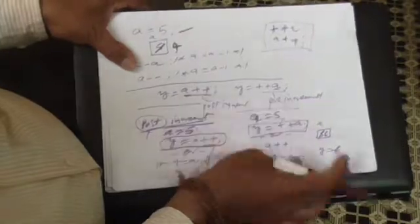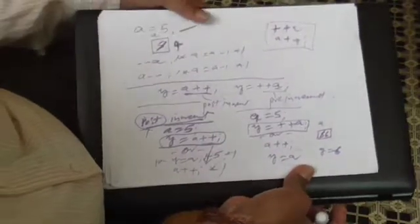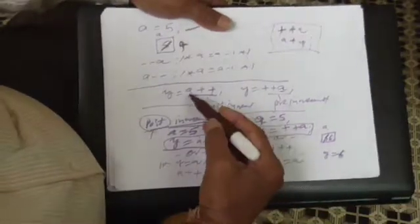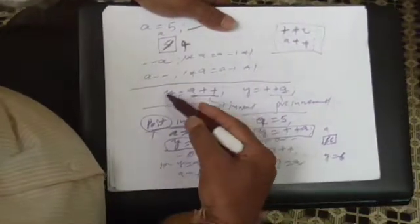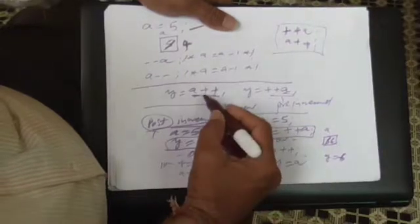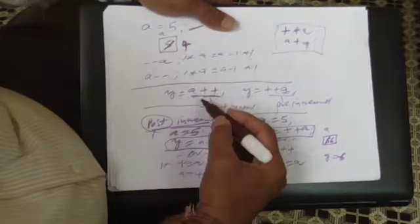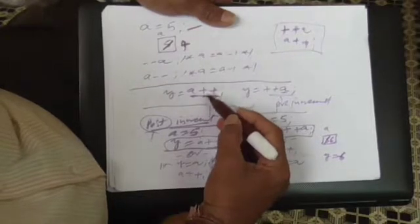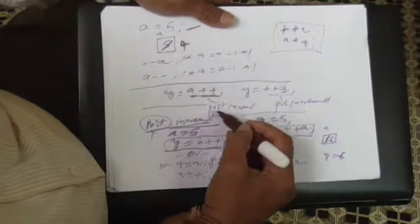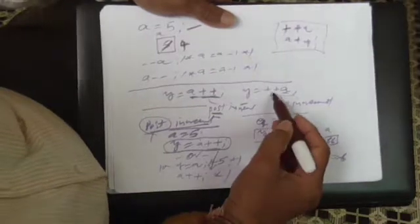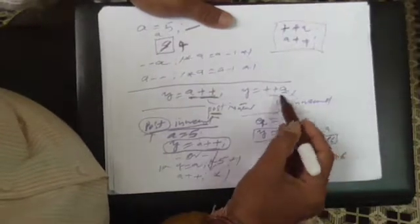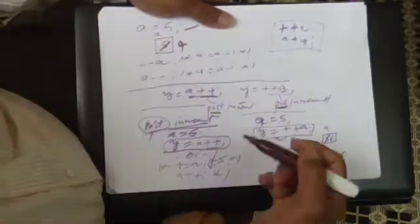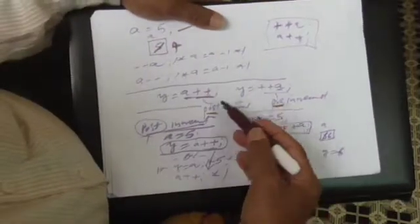The position of ++ is going to influence the value of the expression. If you write Y = A++, the ++ is written after A and hence it is called a post-increment operator. If you write ++A, you call it the pre-increment operator. Incrementation is still there, but the only matter is whether it is post or pre.